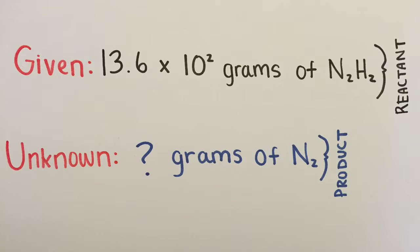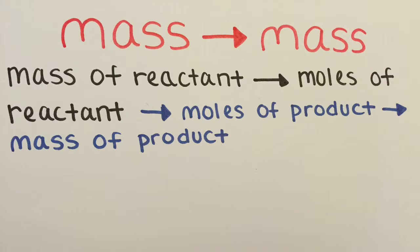Mass of reactant to mass of product. Now, let's start the mass-to-mass conversion. It is good to understand that our conversion will consist of converting from mass of reactant to moles of reactant to moles of product and finally to mass of product.